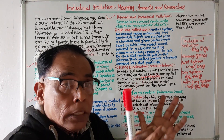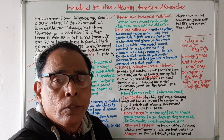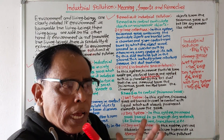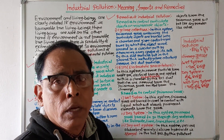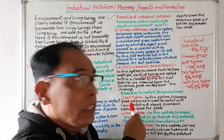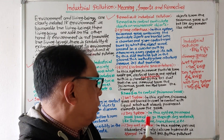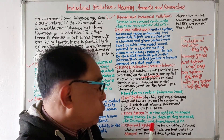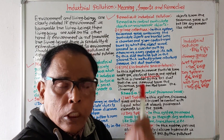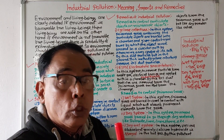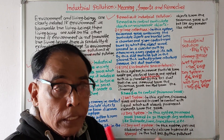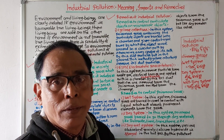In the wet system, poisonous gases are forced to come in contact with a liquid, which will absorb poisonous elements from the gases. In the dry system, poisonous gases are forced to go through dry materials like dolomite, lime, and limestone, and these dry materials act as a filter, removing poisonous elements from the gases.